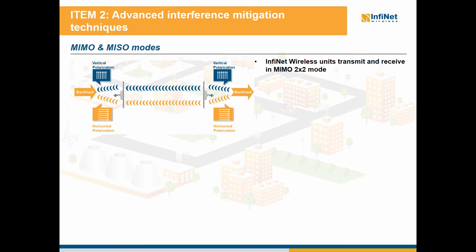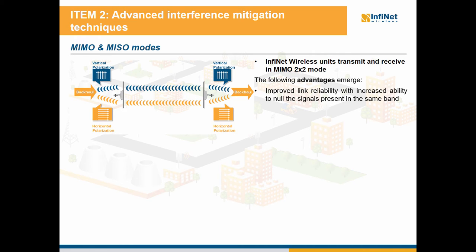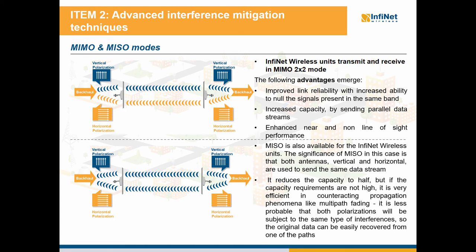Let's move forward and discuss about MIMO and MISO modes. Infinite Wireless units transmit and receive in MIMO 2x2 mode. The advantages are: improved link reliability with increased ability to null signals present in the same band, increased capacity by sending parallel data streams, and enhanced near and non-line-of-sight performance. MISO mode is also available, where both antennas — vertical and horizontal — are used to send the same data stream. This will reduce the capacity to half, but it is a very efficient way to counteract propagation phenomena like multipath fading. Since the same data is received by two antennas, it is less probable that both polarizations will be subject to the same type of interferences, so the original data can be easily recovered from one of the paths.